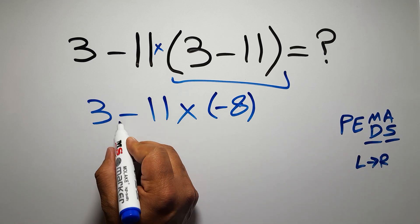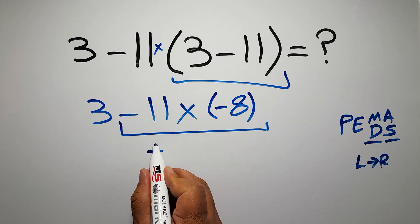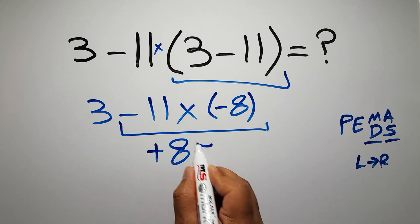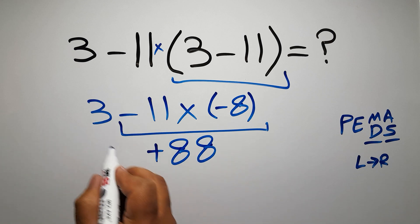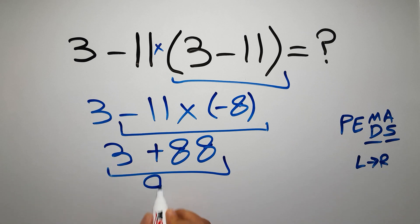Negative 11 times negative 8 gives us positive 88. So we have 3 plus 88, which gives us 91. This is our final answer to this problem.